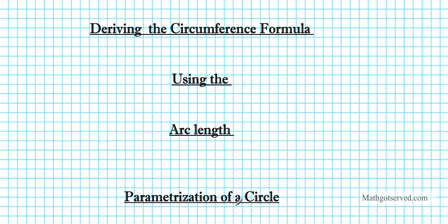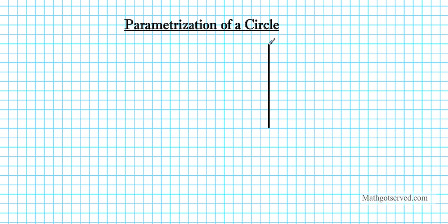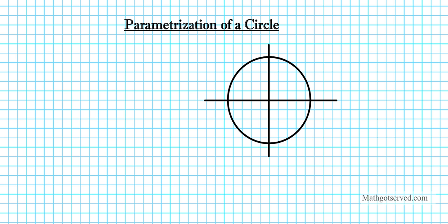Let's start by taking a look at some equations. Let's assume we have a circle drawn on a coordinate system. The assumption is the circle has radius r and is centered around the origin. From coordinate geometry, the equation of this circle is given by x squared plus y squared equals r squared. And we also know from geometry that the circumference of a circle C is equal to 2 pi r.